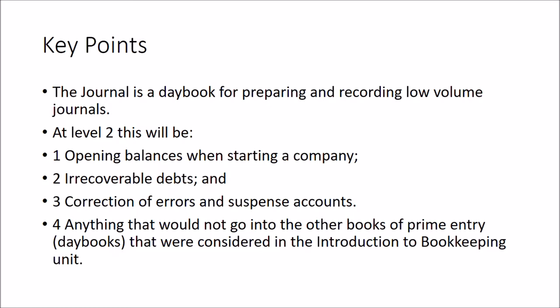Those are the main ones at Level 2, but it would be anything that didn't go into the other books of prime entry — so sales, sales returns, purchases, purchase returns, discounts allowed, discounts received, cash book, and petty cash book. If the examiner comes up with a journal that isn't one of those and asks you where it goes, it would go into the journal.